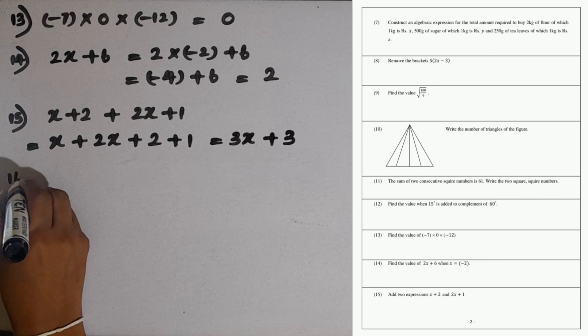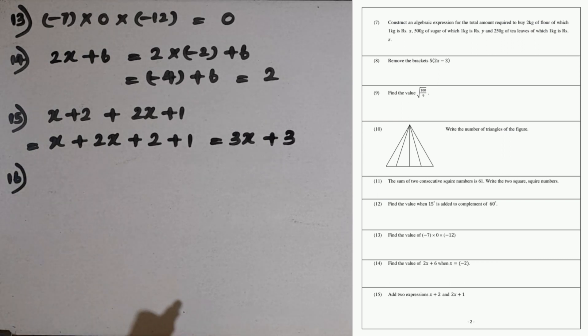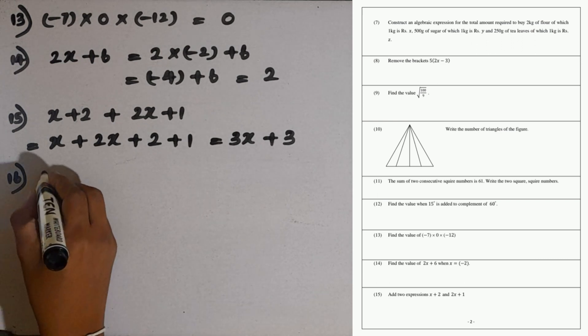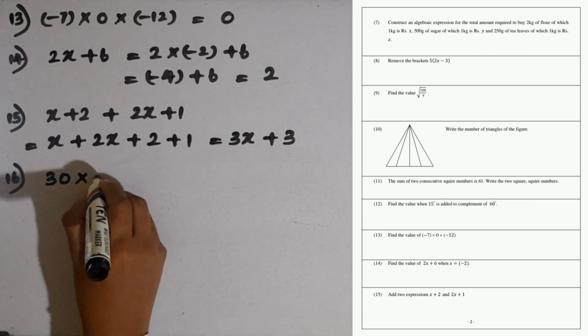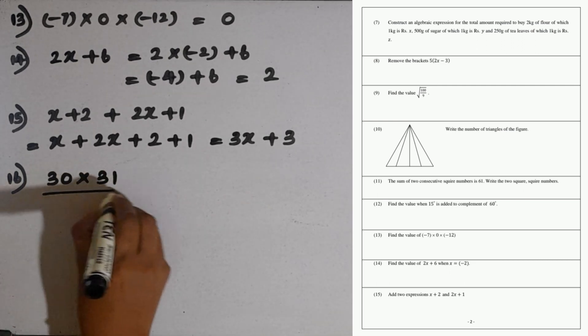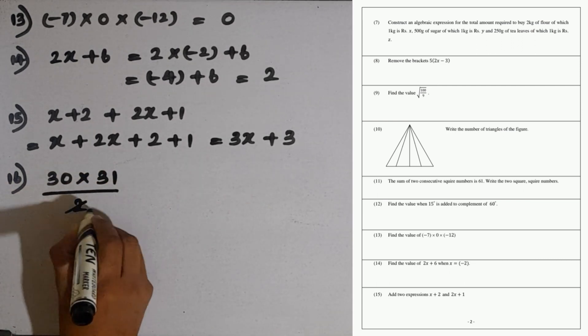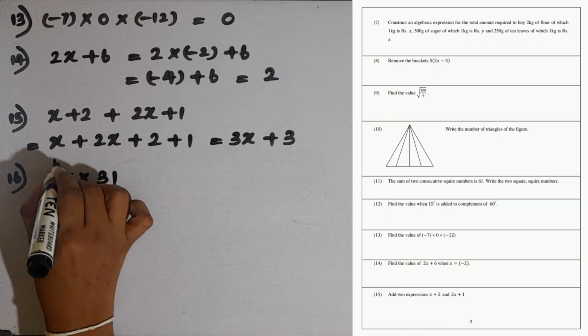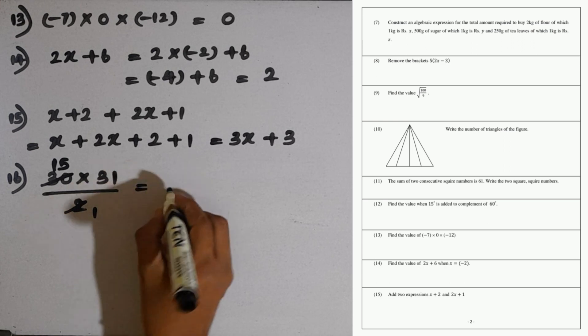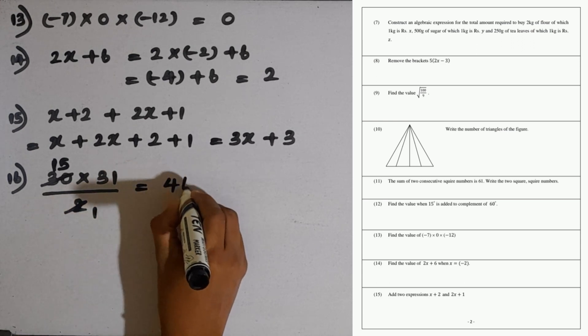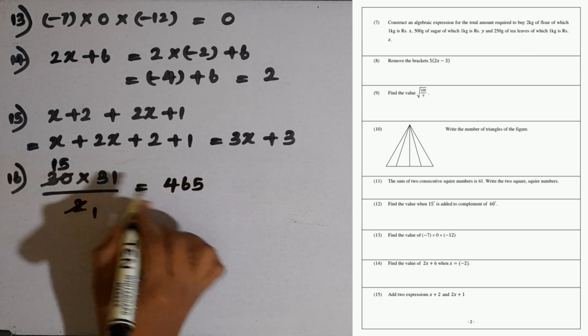Question number 16: find the 30th triangular number. 30th triangular number can be found by 30 multiplied by the next number 31, then divide by 2. 2 times 15, 15 multiplied by 31, that is 465. You have to multiply this and take the answer.